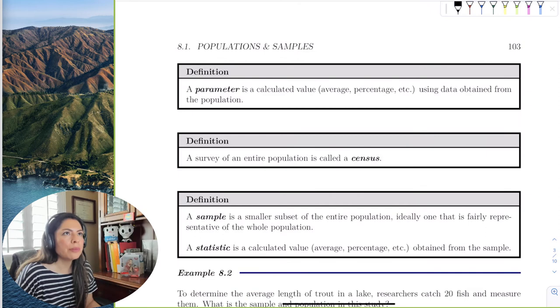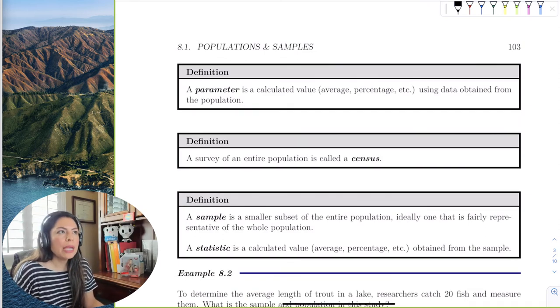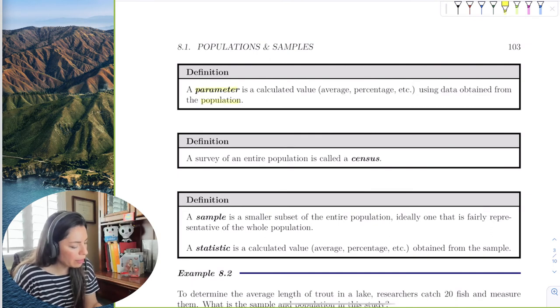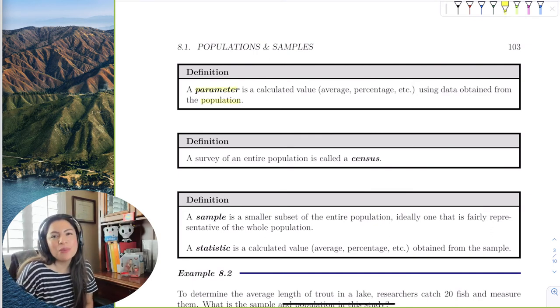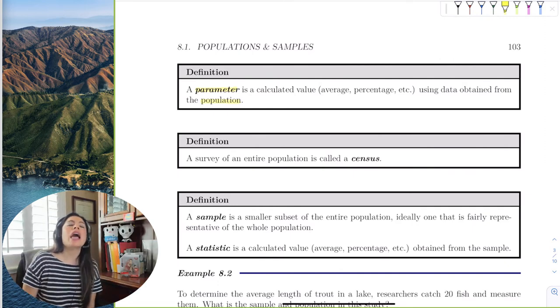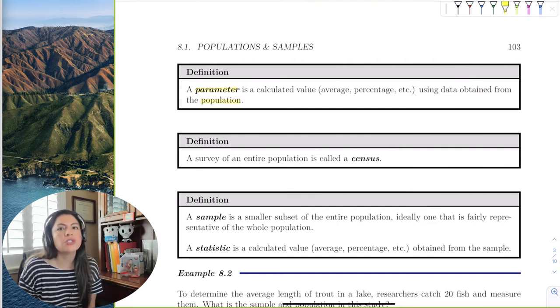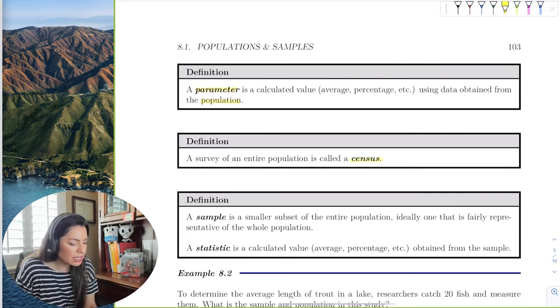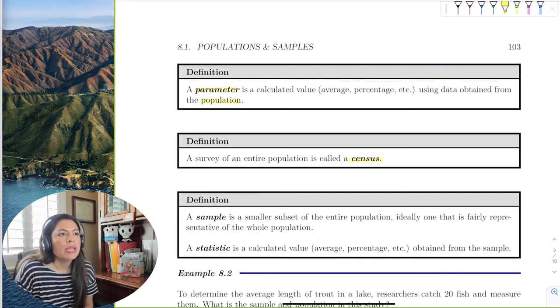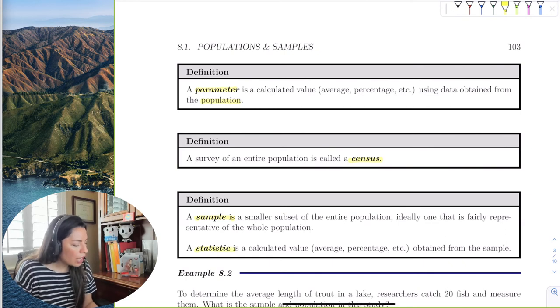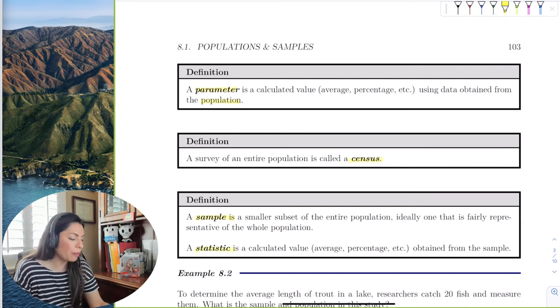Let's talk about the pieces of information we get from our data. A parameter is a calculated value from the population, and you can always remember P with P - P for parameter, P for population. We don't usually sample every single object or subject in the population. It's too timely and too costly. When we take a survey of the entire population, we call that the census. We can always find a smaller subset of a target population or the census that represents the population, and we call this a sample. The values we get from the sample is called a statistic. S with S - S for sample, S for statistic. P for parameter, P for population.